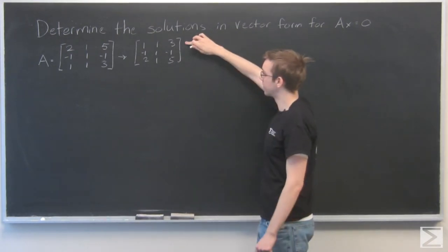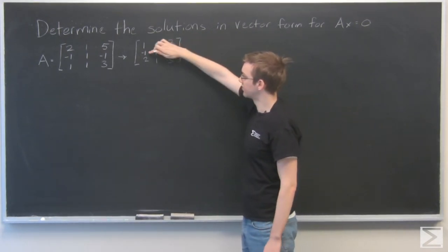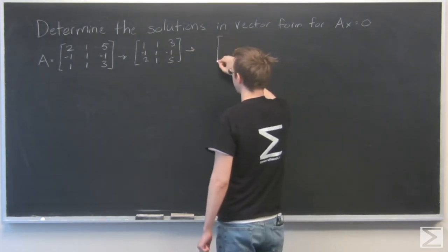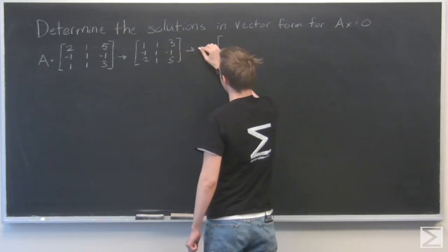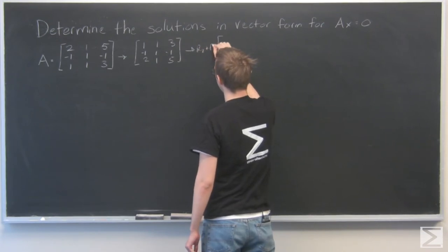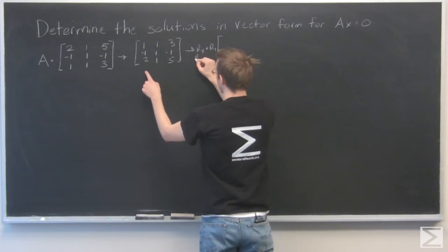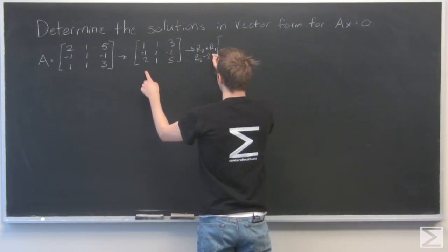Now I'm going to take this first row and use that to get 0s in this spot and this spot. So I like to write what I'm doing on the side. For row 2, I'm going to add it to row 1 because that negative 1 and 1 will make 0. And for row 3, I'm going to subtract 2 times row 1.